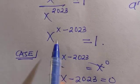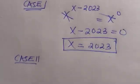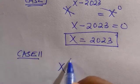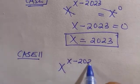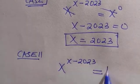Let's see the second case. We write this as X raised to power X minus 2023 equals 1.